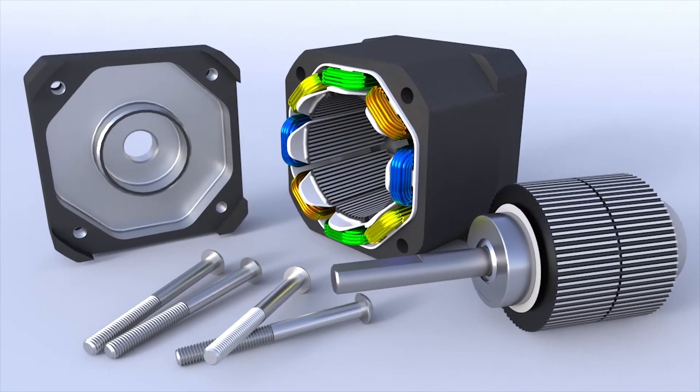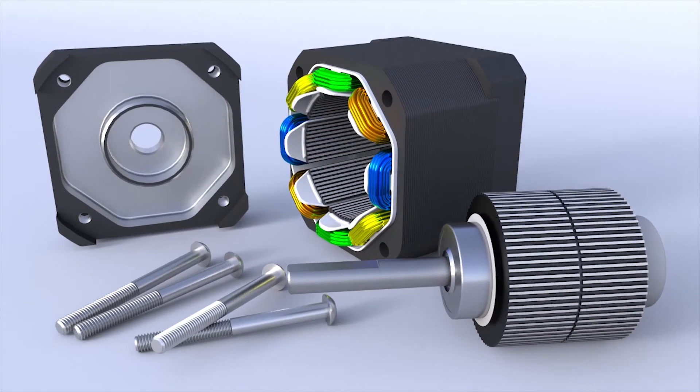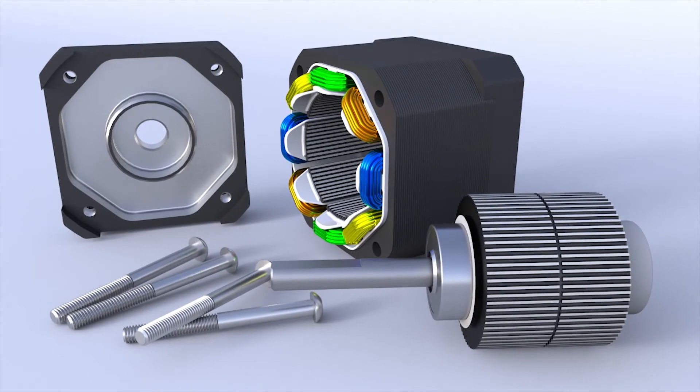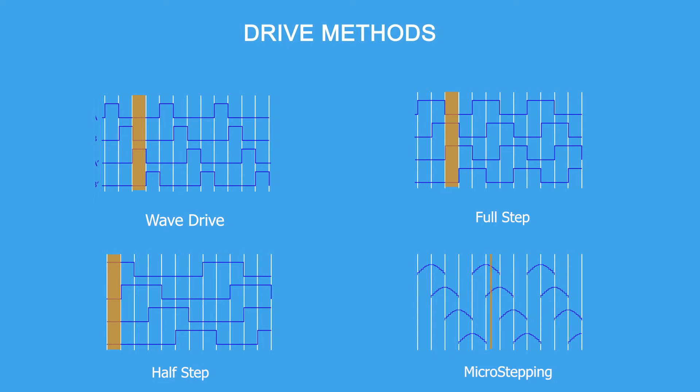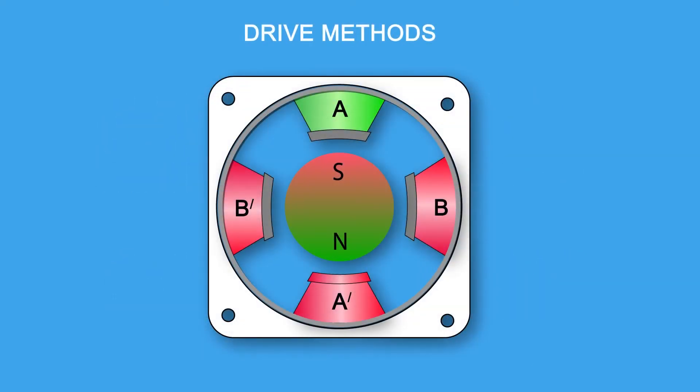A stepper motor is a polyphase AC synchronous motor and it is ideally driven by sinusoidal current. There are four commonly used excitation modes for stepper motors: Wave drive, full step, half step and micro stepping. These excitation modes have an effect on both the running properties and the torque that motor delivers.